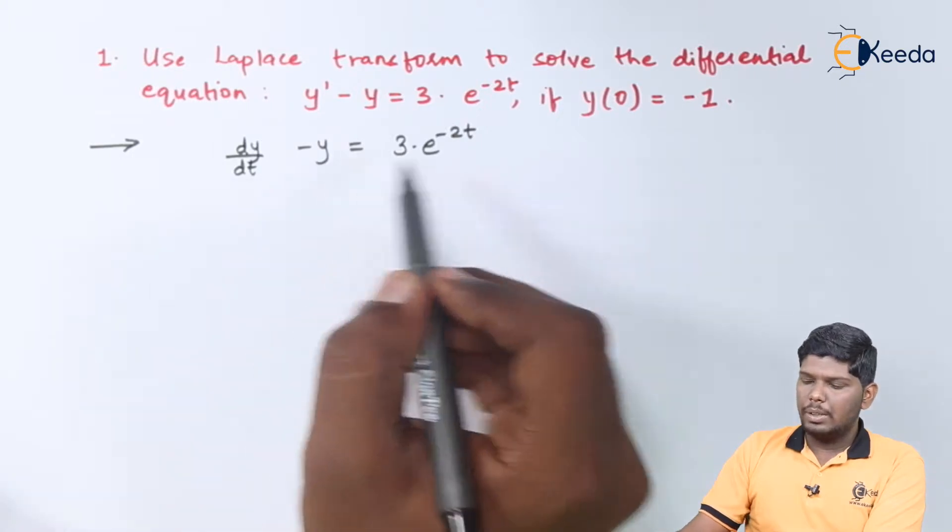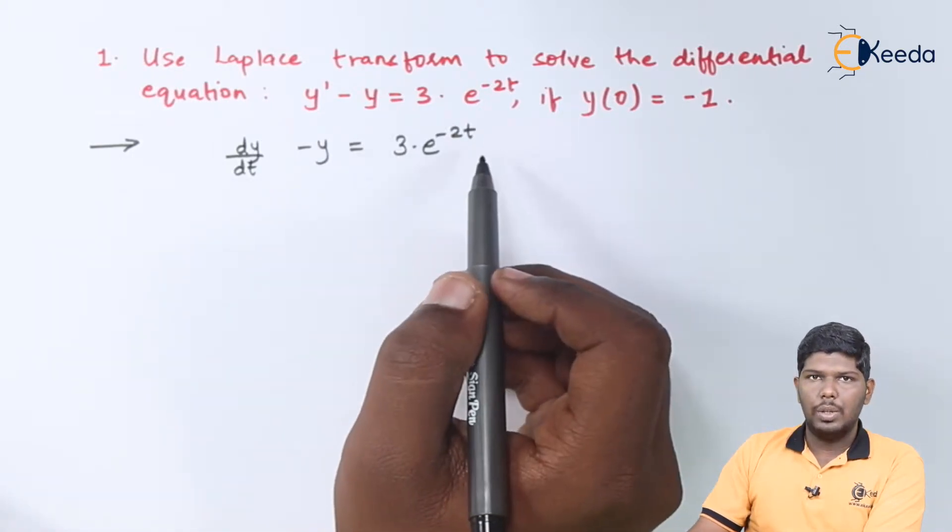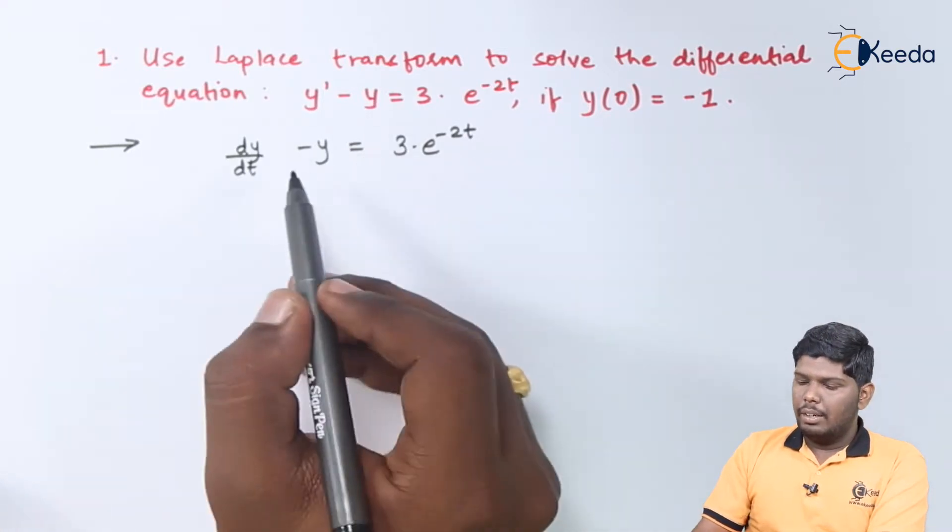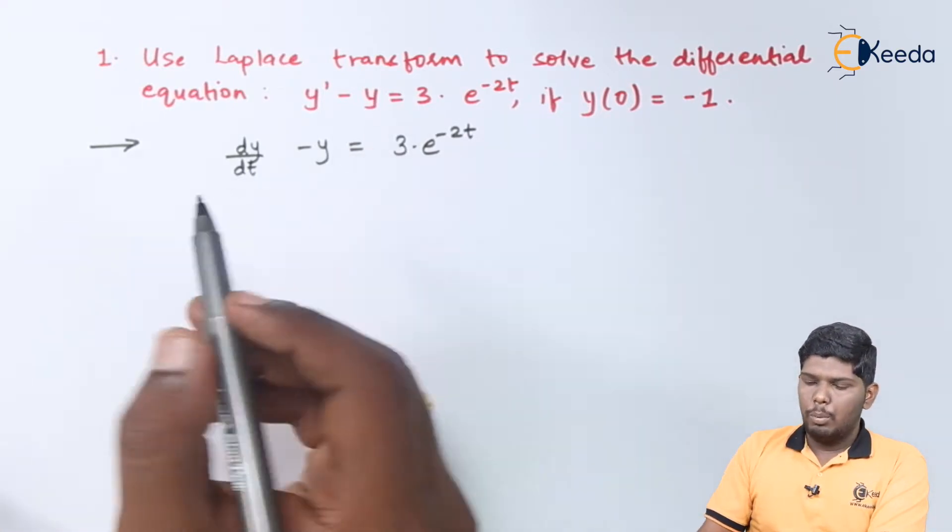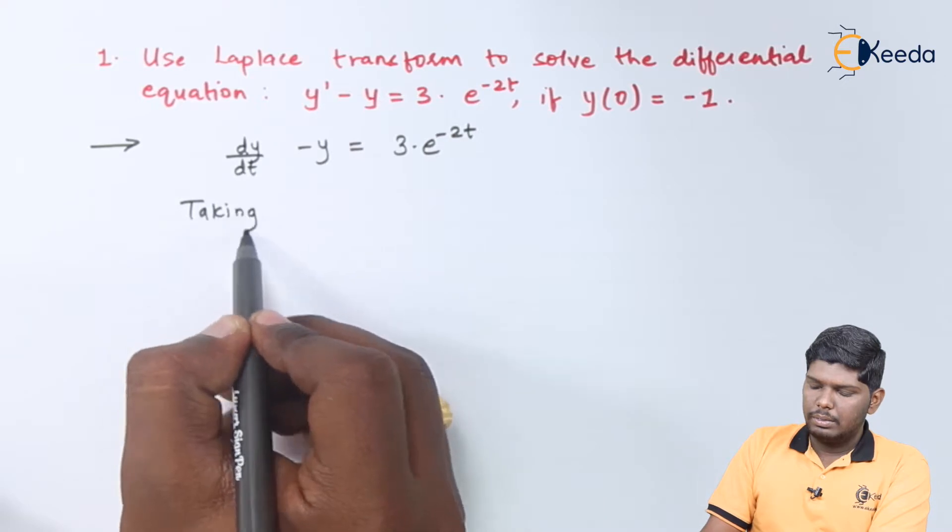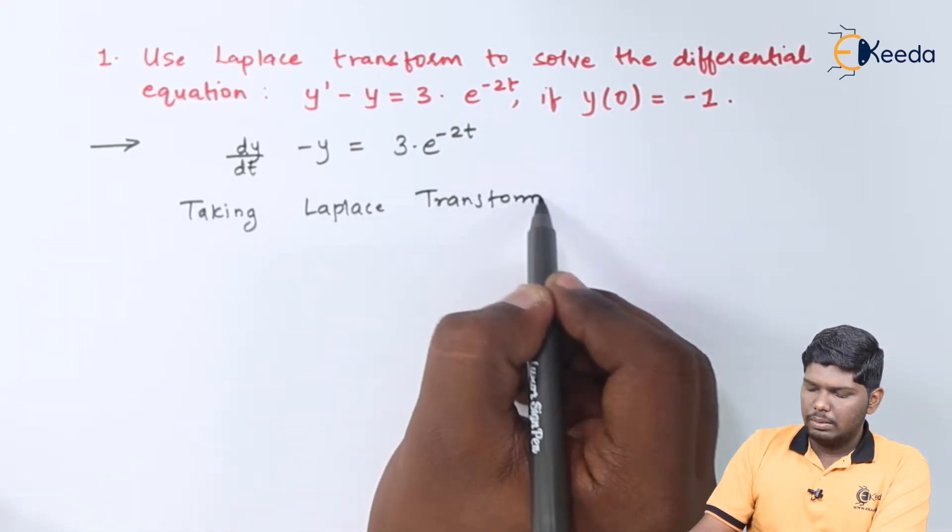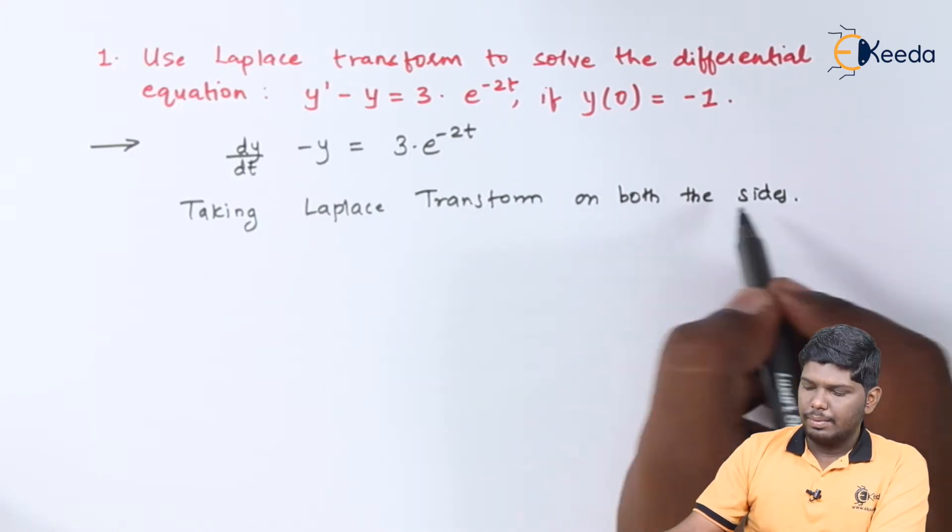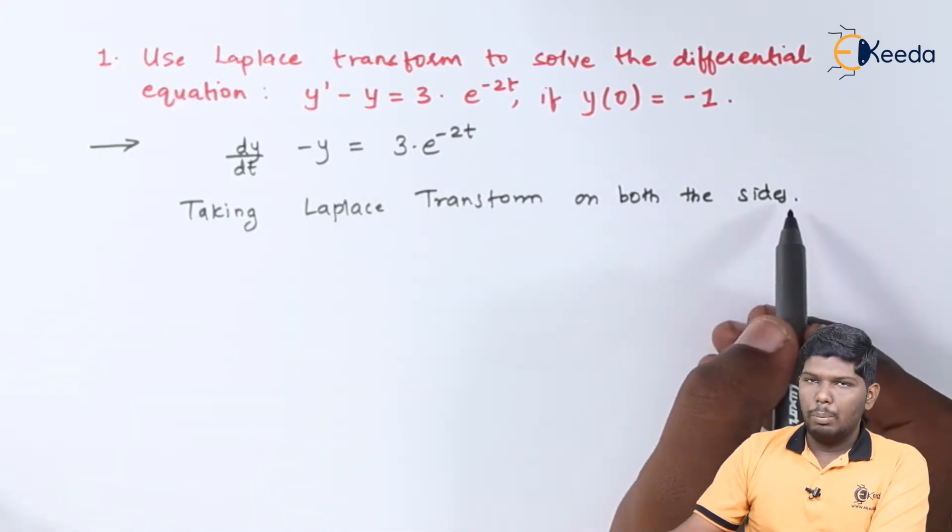So this will give you dy by dt minus y is equal to 3 e raised to minus 2t. After that, we can take Laplace transform on both the sides.